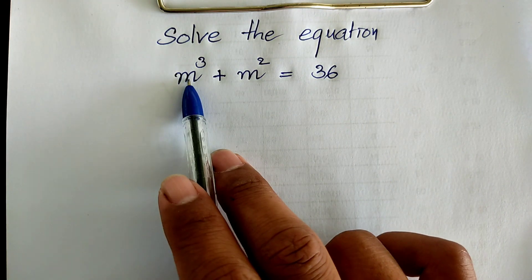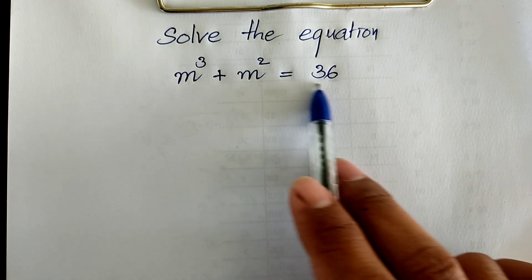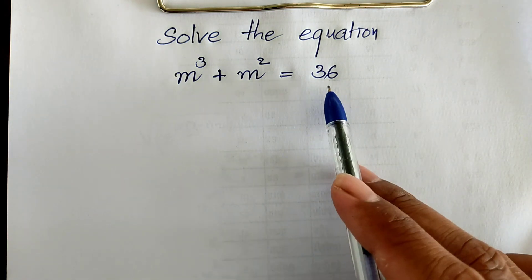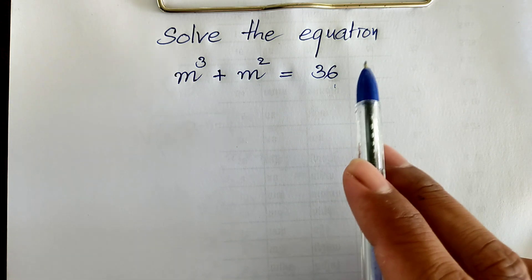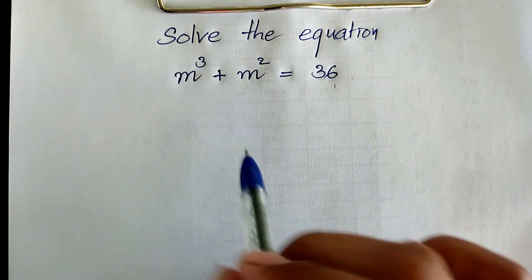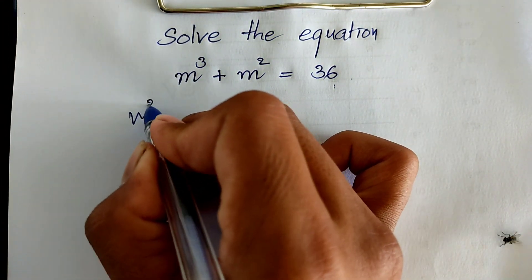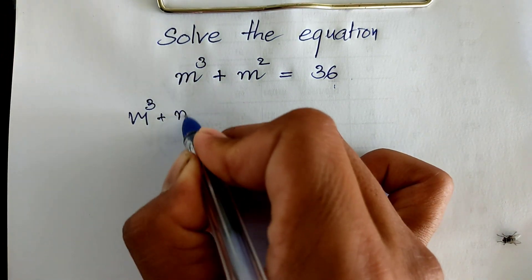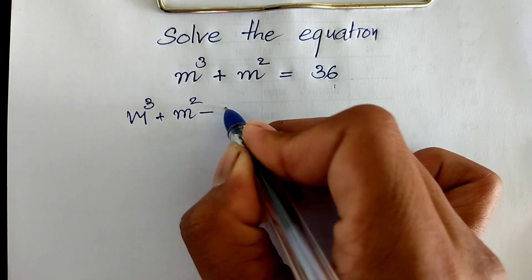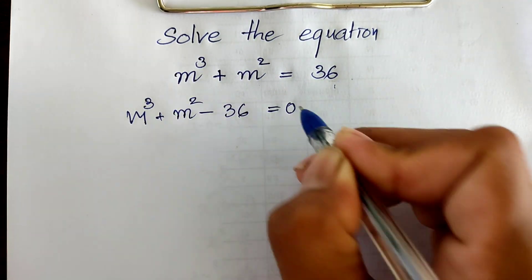Now our equation is m power 3 plus m square equals 36. I change 36 from the right hand side to the left hand side, so I get m power 3 plus m square minus 36 equals 0.